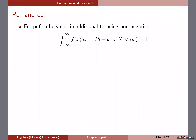Let's look at the PDF and the CDF. Recall we defined the CDF — cumulative distribution function — in the discrete case as well, where we summed up PMF values for all x less than or equal to a. The CDF is also defined for continuous random variables. For a PDF to be valid, first it has to be non-negative.